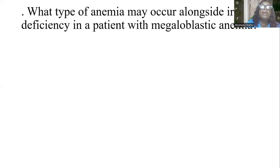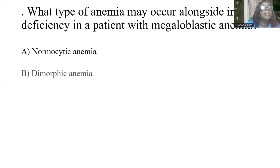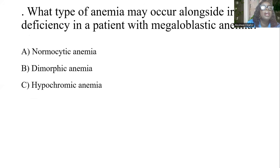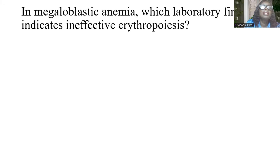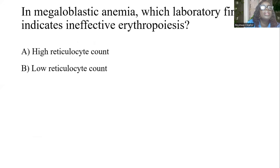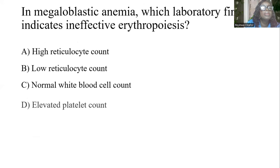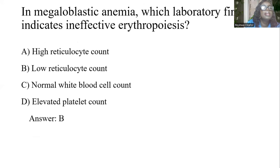What type of anemia may occur alongside iron deficiency in a patient with megaloblastic anemia? A, normocytic anemia. B, dimorphic anemia. C, hypochromic anemia. D, sideroblastic anemia. And the answer is B, dimorphic anemia. In megaloblastic anemia, which laboratory finding indicates ineffective erythropoiesis? A, high reticulocyte count. B, low reticulocyte count. C, normal white blood cell count. D, elevated platelets. And the answer is B, low reticulocyte count, indicating ineffective erythropoiesis.